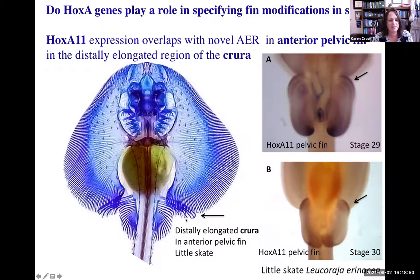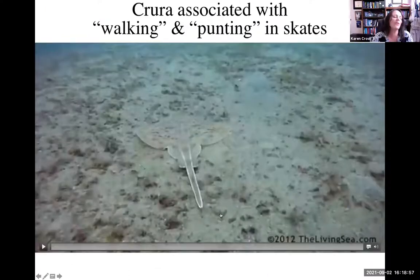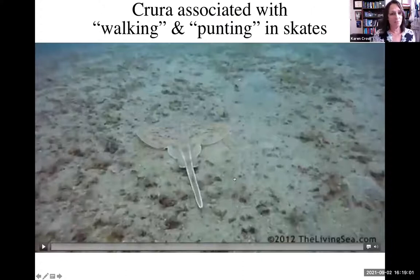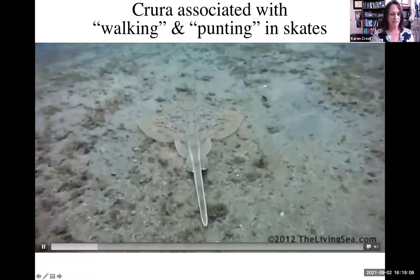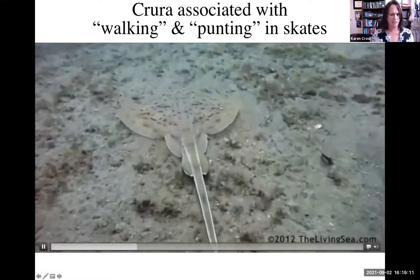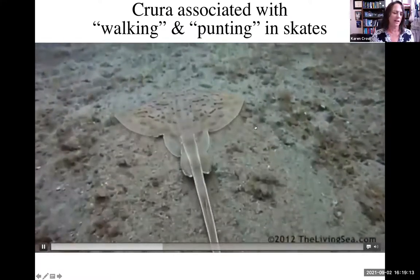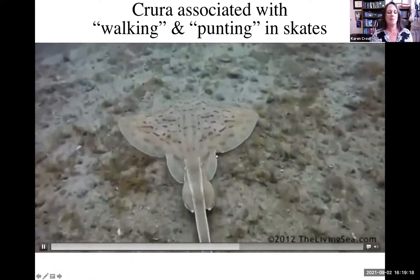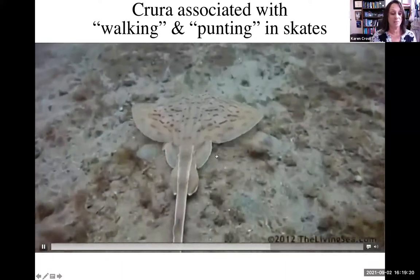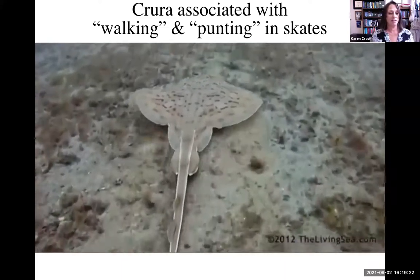The crura is associated with a novel mode of locomotion in skates called walking or punting. Here you can see a clearnose skate moving along the bottom — its pectoral fins are relatively stiff and not moving, but it's using those elongated crura on the pelvic fins to walk along the bottom and in some cases punt.